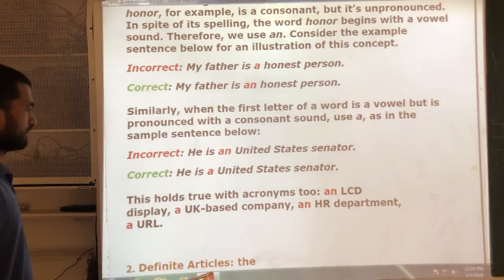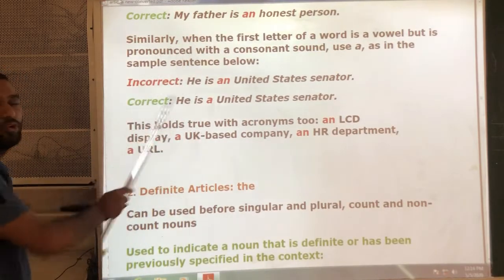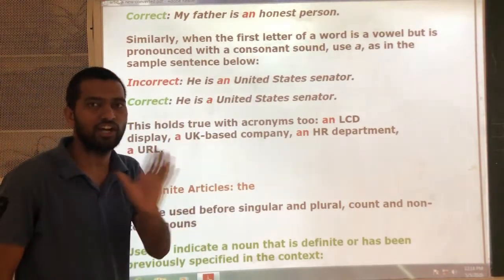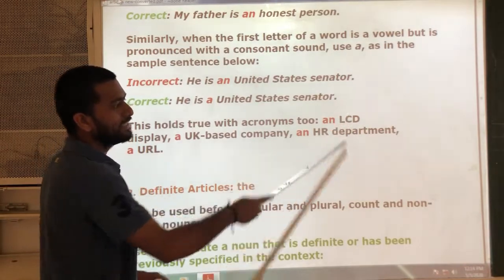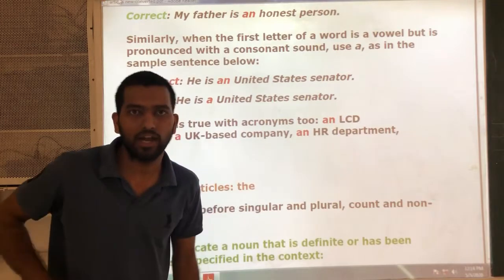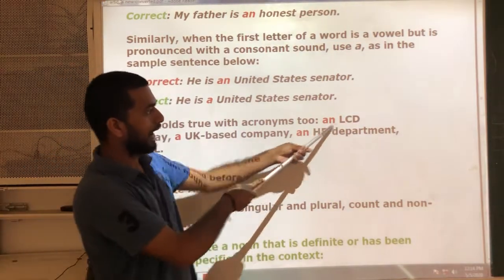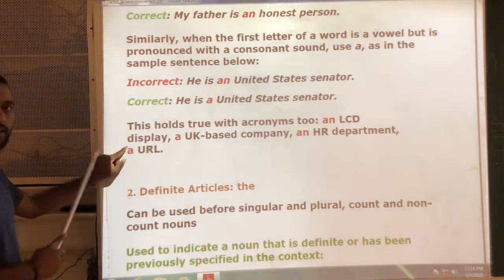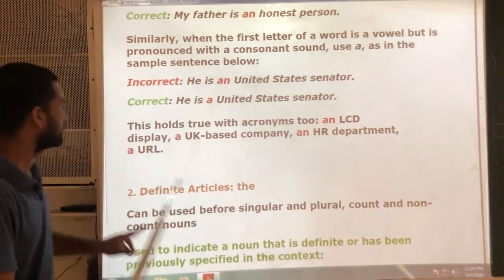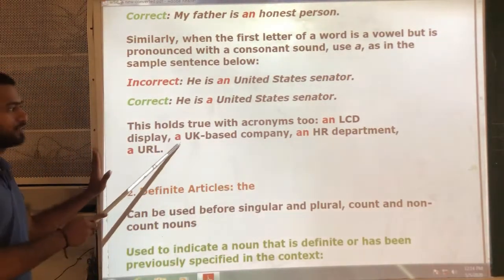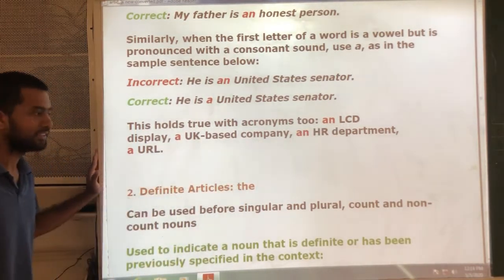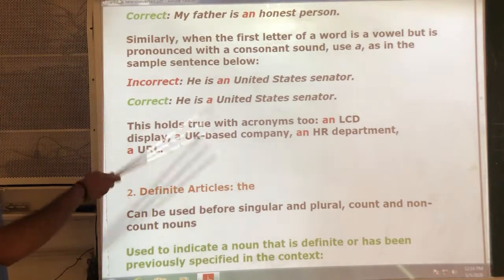This rule also applies to acronyms — any abbreviations or short forms. For example, 'an LCD' — we read LCD with a vowel sound starting with L, so 'an' is used. Examples: an LCD display, a UK-based company, an HR department, a URL. Observe the articles used before these words. This is all about indefinite articles.